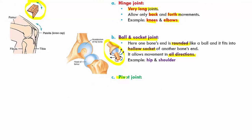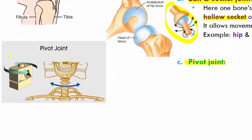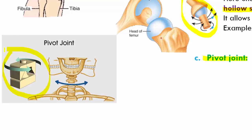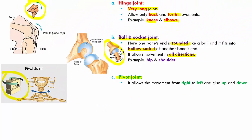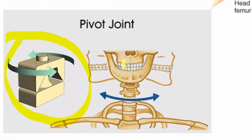Next we have the pivot joint. If you see pivot joints, they allow movement from right to left and up and down. The example is the joint between your skull and your neck — it allows your head to move from left to right and up and down. That is because of the pivot joint.